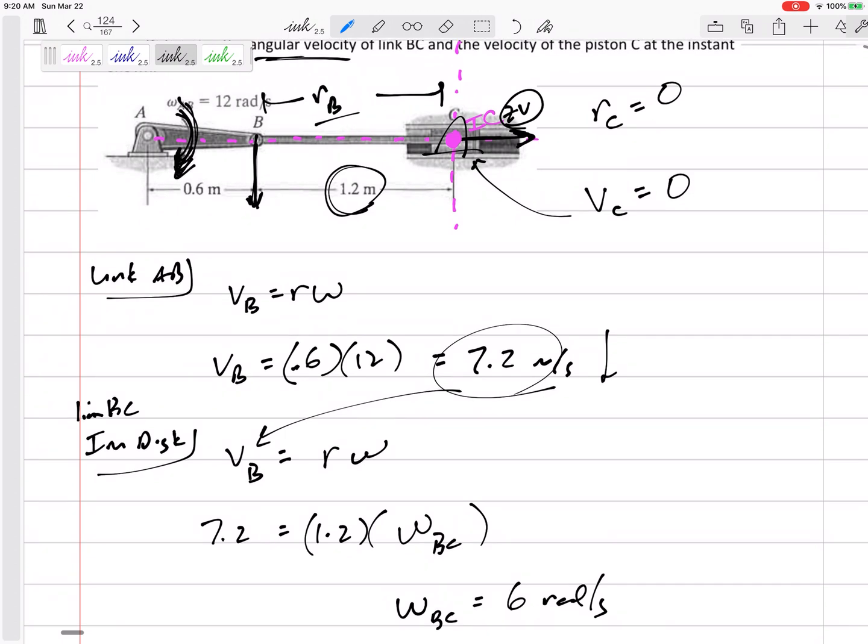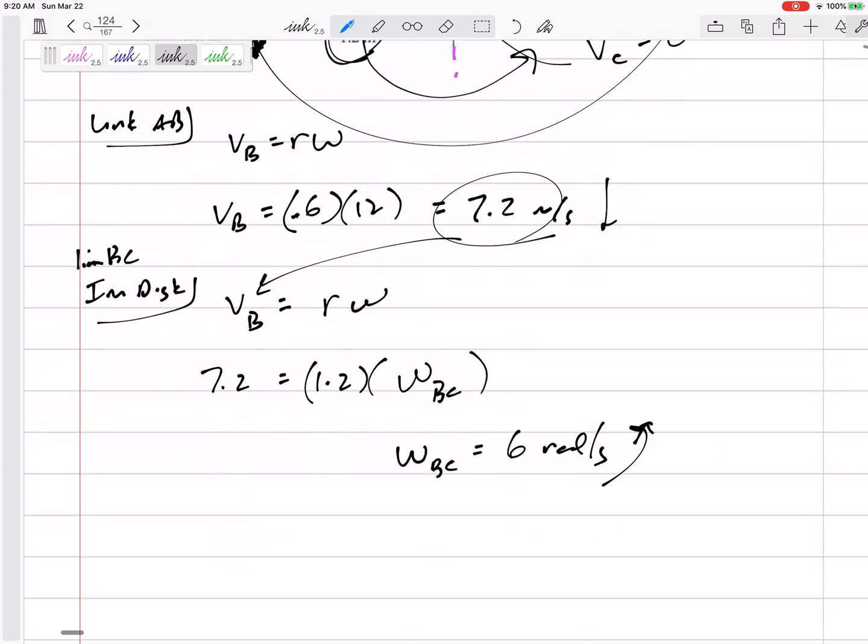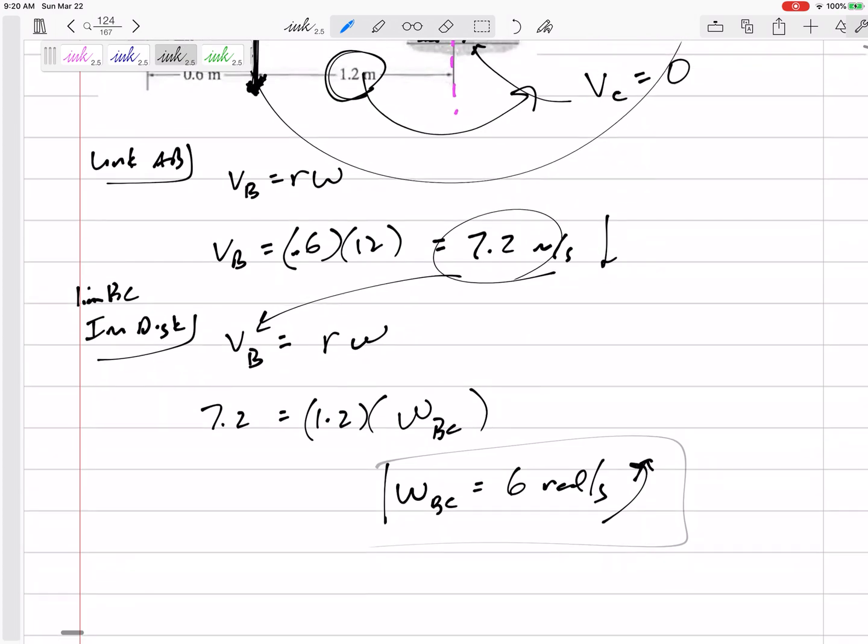If link AB is rotating that way, then that means VB is going down. If VB is going down and my imaginary disc over here is fixed over here at C, then that would mean that this imaginary disc would be going counterclockwise. So six radians per second counterclockwise.